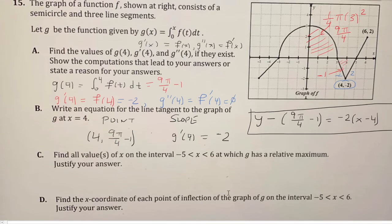Now we want to find all values of x on the interval from negative 5 to 6, at which g has a relative maximum. In order to find the relative maximum, we have to look at g prime. So the number line of g prime, which g prime we said is f.